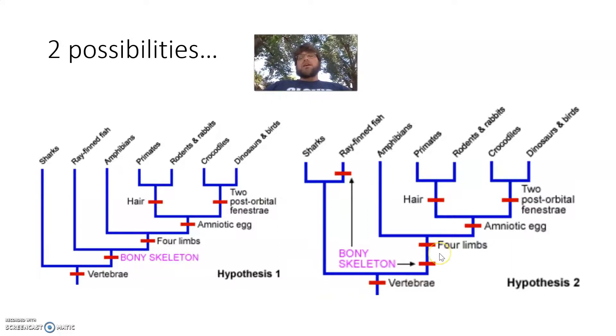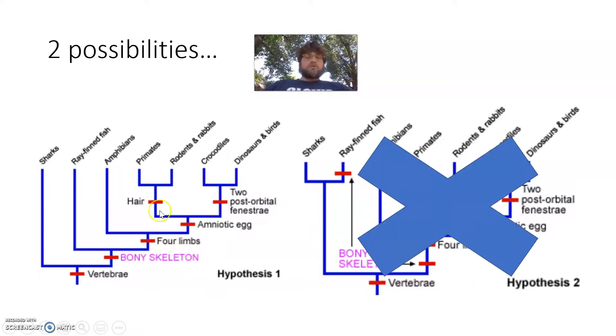But in this example, the shared-derived characteristic of a bony skeleton popped up twice. We had to put it in two times to create this cladogram. Now, visually, this might make sense, but from parsimony, from the simplest possible explanation using our evidence, this one, let's cross out two, number one is best because it is the simplest cladogram we can make. And this cladogram on the right that I crossed out, I had to add one extra step. I don't need to do that.